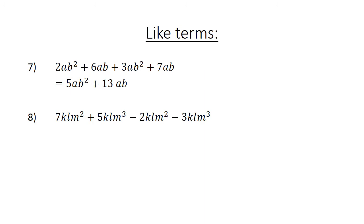Now we have 7klm squared plus 5klm cubed minus 2klm squared minus 3klm cubed. You can only add the powers that are the same. So 7klm squared minus 2klm squared equals 5klm squared, and 5klm cubed minus 3klm cubed equals 2klm cubed.